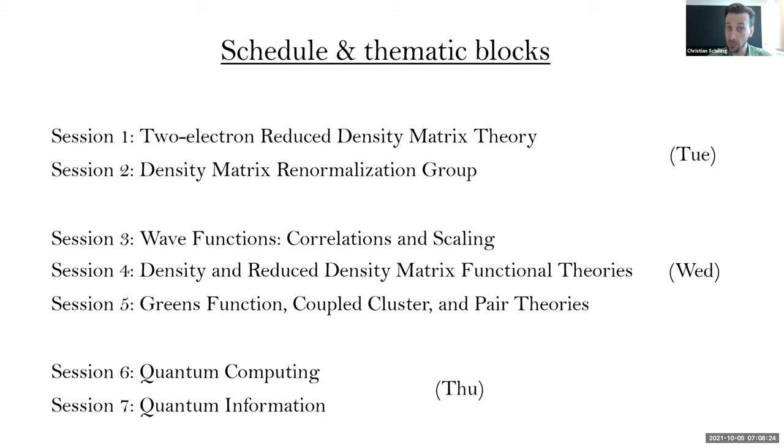Therefore, we set up the event in the following way. Today, we first focus on the two-electron reduced density matrix approach. This is, in some sense, the most natural approach to the ground state problem because we have pair-interacting systems, and the 2-RDM is the natural variable for taking care of this structure. Then we continue with the really popular density matrix renormalization group approach, which now also plays an important role in quantum chemistry since about ten years.